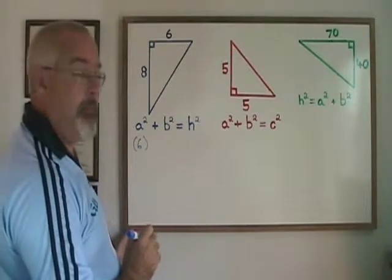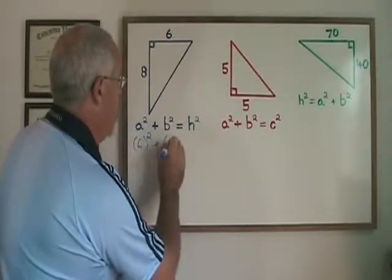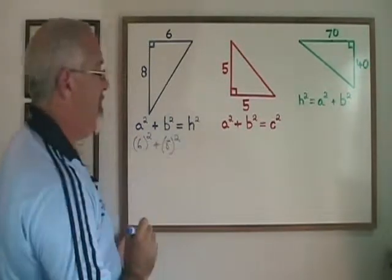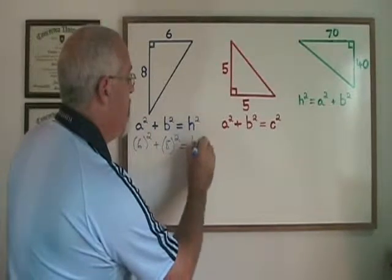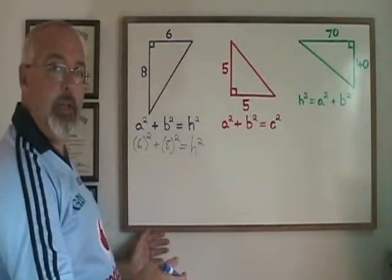Using 6 as my a, I get 6 squared plus 8 squared equals h squared. In this case, h stands for hypotenuse and not height.